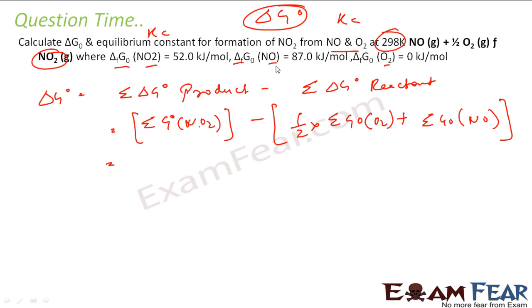Delta G naught of NO2 is 52 kilojoules per mole minus one-half into O2, which is zero, plus NO, which is 87 kilojoules per mole. So you solve this and you get minus 35 kilojoules per mole. So this is my delta G naught for the whole reaction.